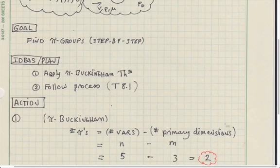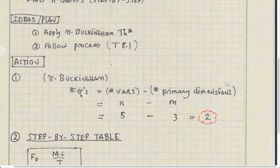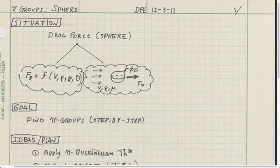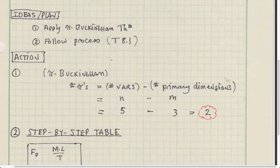To reach the goal, we apply the Pi-Buckingham theorem and follow the process in table 8.1. The Pi-Buckingham theorem tells us to take the number of variables and subtract the number of primary dimensions. Going back to the functional equation and counting: 1, 2, 3, 4, 5 variables. Velocity has length and time; density has mass and length. Checking all variables, there are three primary dimensions: mass, length, and time. So with 5 variables and 3 primary dimensions, we expect to find two pi groups.